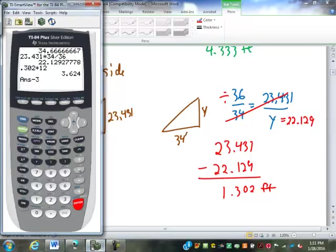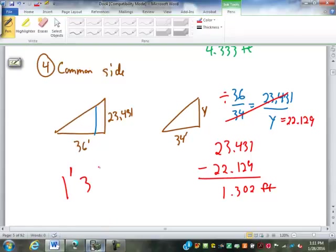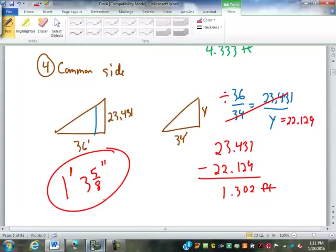Subtract the 3. Times 16. 9.9 or 10, so 5 eighths. 10 sixteenths are 5 eighths of an inch. So 1 foot 3 and 5 eighths inches is the decrease on the common side of the roof. So there's a different decrease on each side. 4 foot 4 inches on the jack, on the hip side, and 1 foot 3 and 5 eighths on the common side.